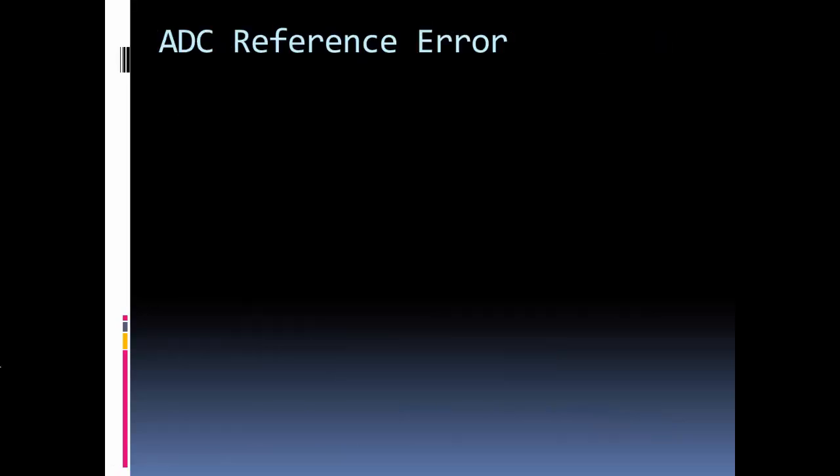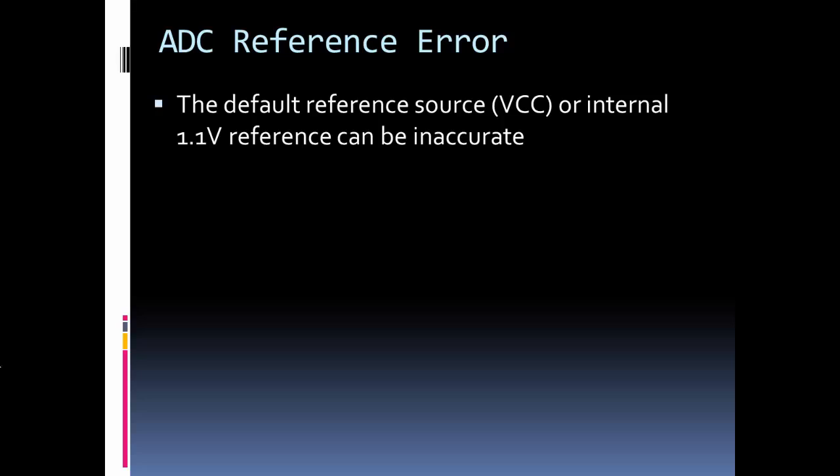Okay, let's look at ADC reference error. And I talked about this in part one, but the whole idea is, you can set your reference, and that's what the ADC is going to use as a known value to compare the measured value to give you some result. And there's three choices. You can use the VCC, or the power supply voltage level. You can use the internal 1.1 volt source as your reference, and you can also use an external reference.